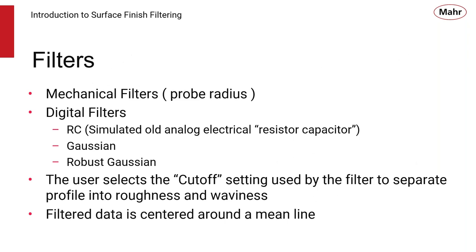There are different types of filters. The probe going over the part is a mechanical type filter, and there are different probe radii — two micron, five micron — which filter the profile slightly differently, and there's nothing you can adjust with that. There are also digital filters: RC filters, which simulate the old resistor-capacitor type; Gaussian filters; and robust Gaussian filters. These are all mathematical formulas through which the signal passes to filter out data we don't want to see.